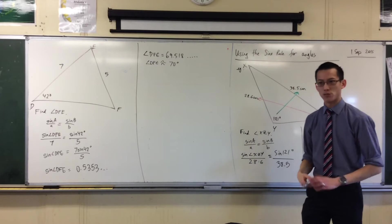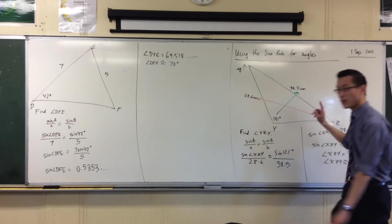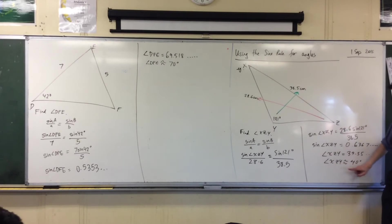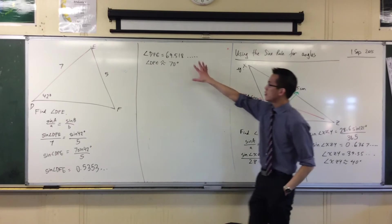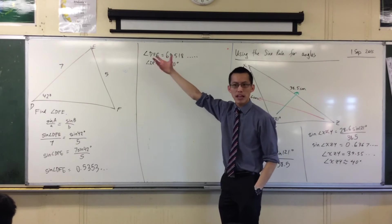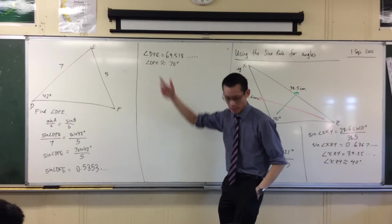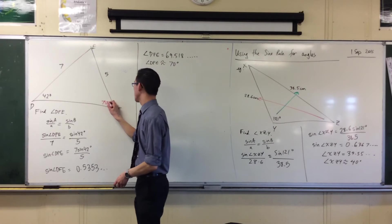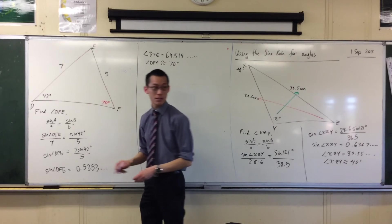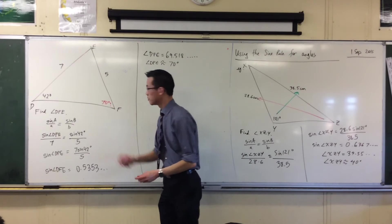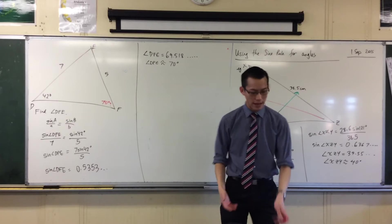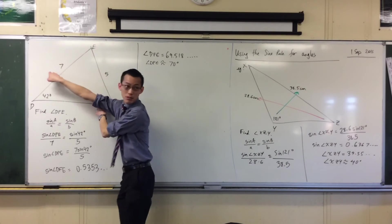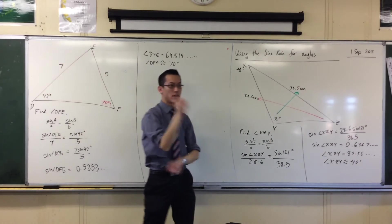Now, again, pause. We'll do what we did over here. Does that answer make sense? Does it look like what should come out? I'm trying to say that this angle over here is 70 degrees — question mark. I think it looks fine. It looks okay, right? We've got smaller angle, smaller side, bigger angle, bigger side. No problems.